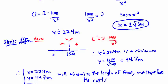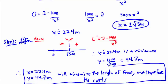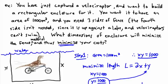Those are the dimensions that work best. Going back to the original example: if x = 22.4 and y = 44.7, you won't get exactly 1000 due to rounding, but using the exact values x = √500 and y = 1000/√500 gives an area of exactly 1000 m², and this configuration gives the least length needed.